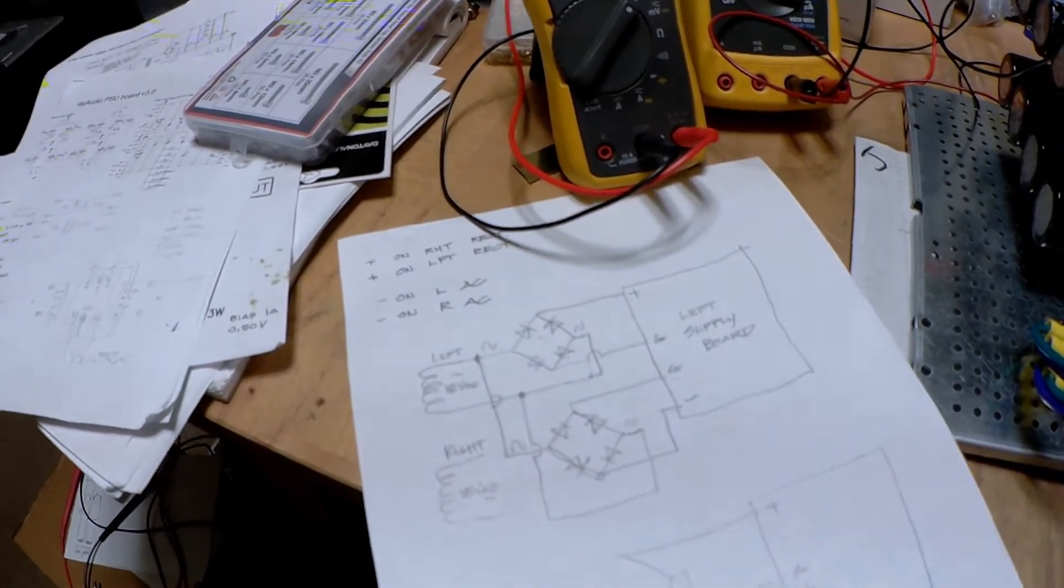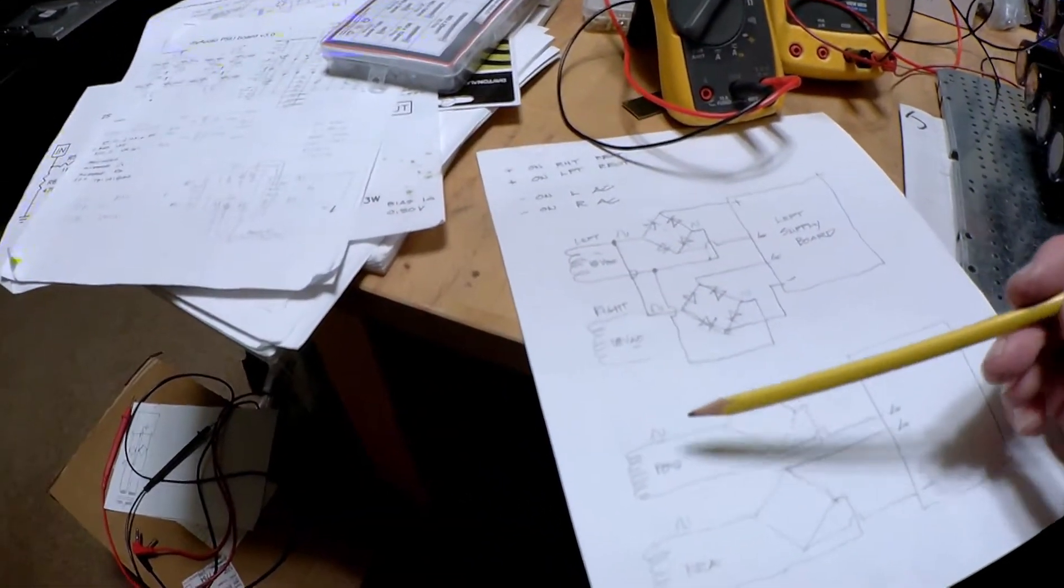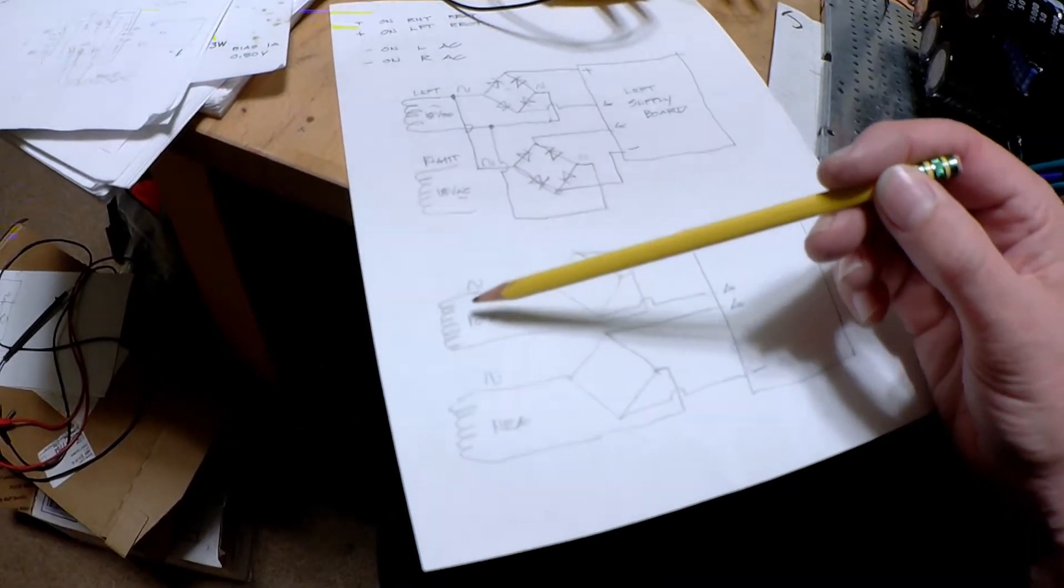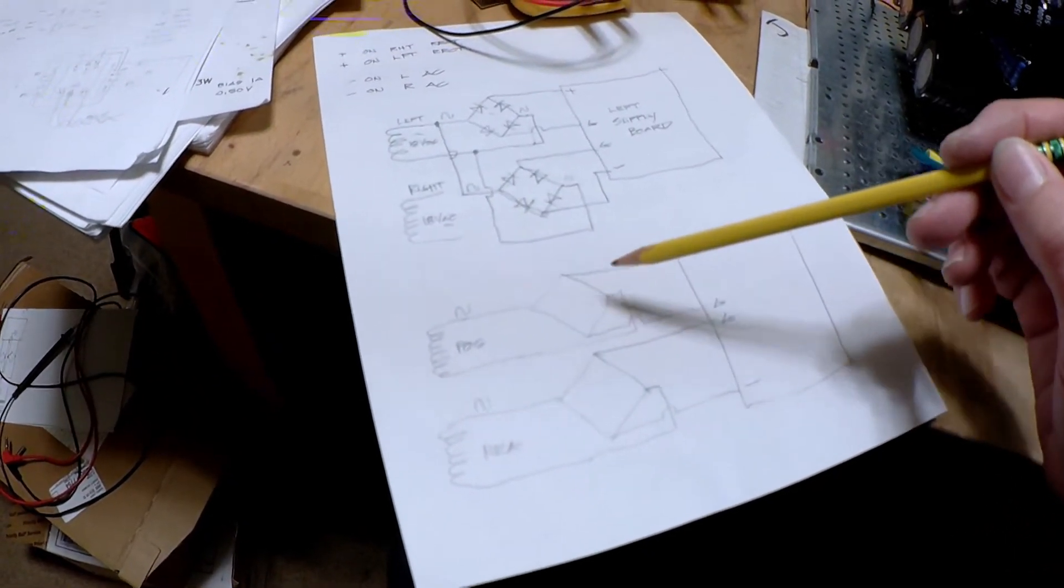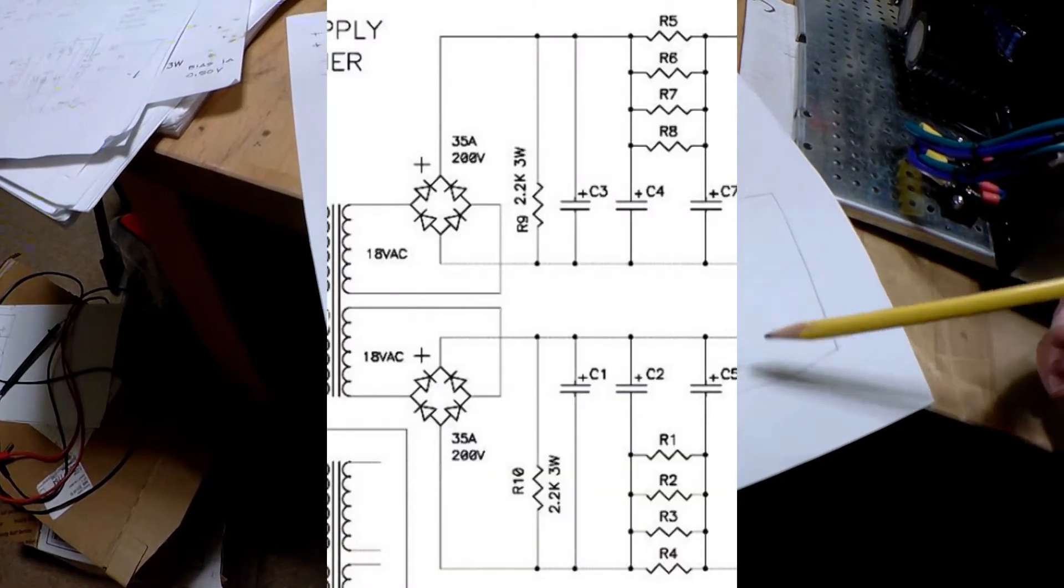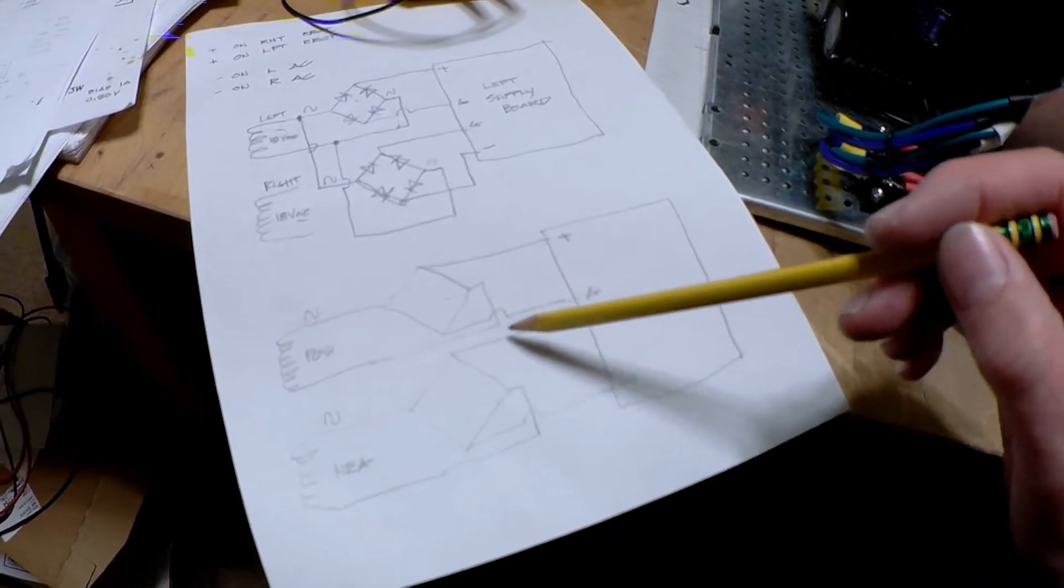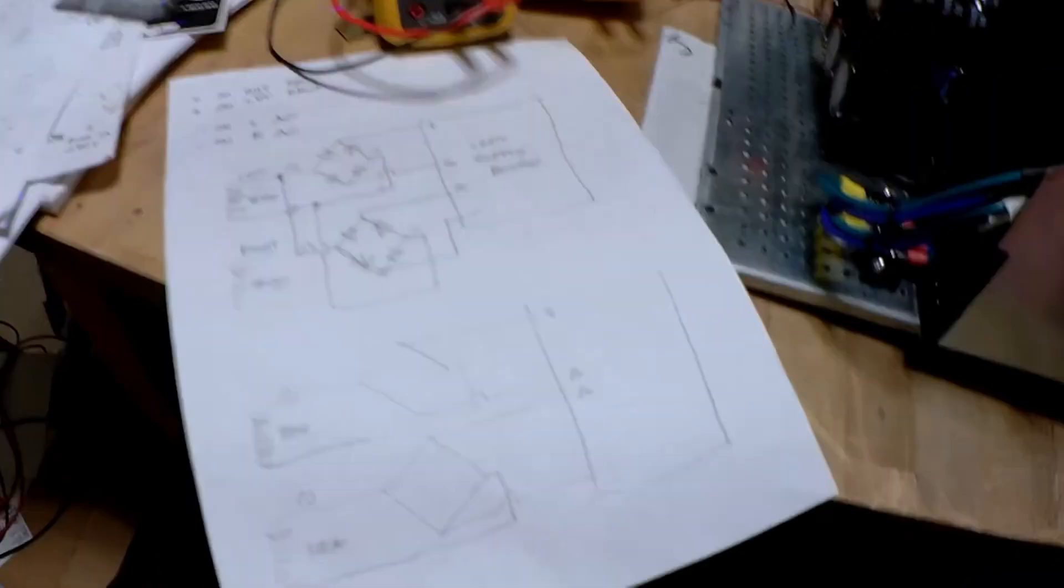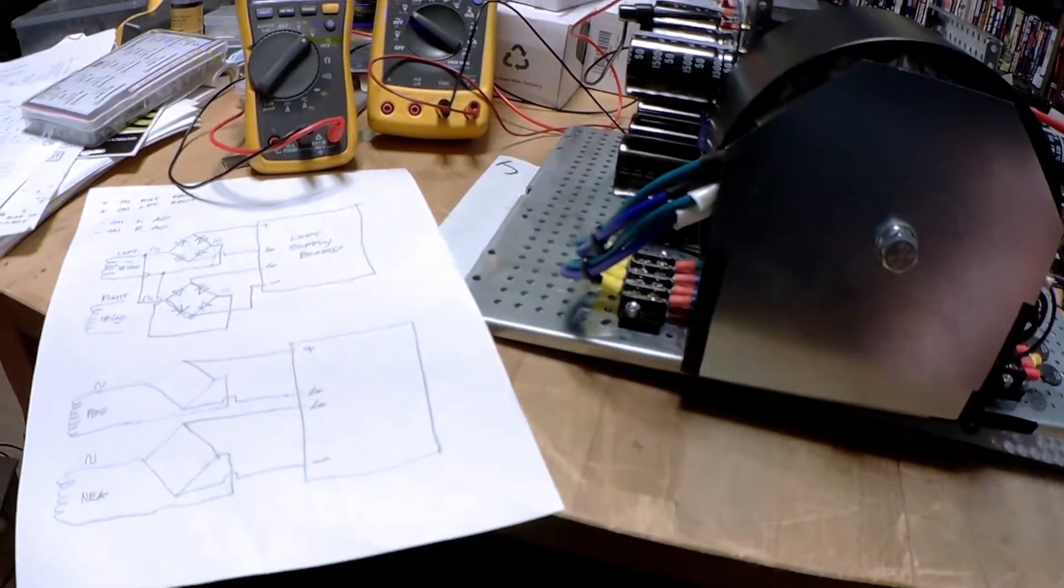Anyway, what it should look like is more like this: one winding is the positive supply for both channels, one winding is the negative supply for both channels. And then you go on to the power board, plus, minus, and then the center grounds are tied together. And that's it.